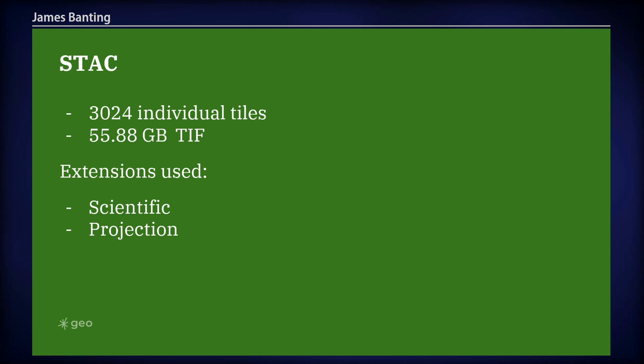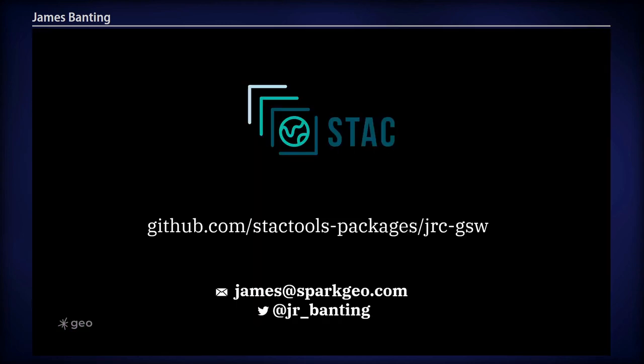As Pete mentioned, STAC items have to be described by GeoJSON, which is WGS84. So the projection extension allows us to give both of these for the user, and the user can decide. The STAC packages — this is where you can go and find the data set: STAC tools packages, JRCGSW, and this is where everything lives. You can download it, it points to the data, and you can have your STAC packages ready to go. Again, my name is James Banting, and I'm happy to talk about this after this session. Thanks.